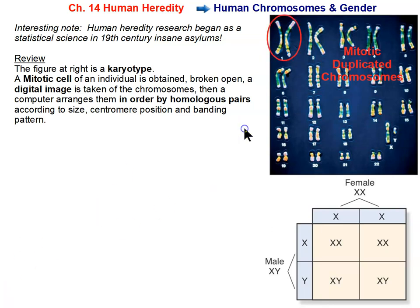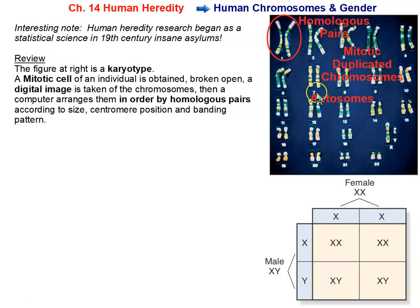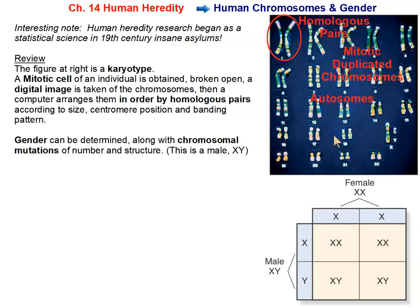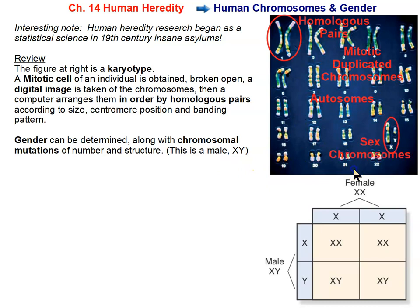Each one of these chromosomes in a homologous pair has two sister chromatids. All chromosomes that are not sex chromosomes — chromosomes 1 through 22 — are autosomes. That's what we call the chromosomes that are not sex chromosomes. Gender can be determined, along with chromosomal mutations of number and structure, using a karyotype. With a karyotype, we can see that this is a male.